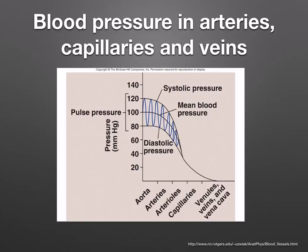Blood is pumped by the left ventricle into the aorta and this causes the aortic walls to stretch. The pressure falls in the arteries as a result of this extension. The elastic wall of the aorta then recoils, which increases the pressure again. This leads to regular fluctuations in the aorta and other arteries, which explains the zigzag nature of the curve at the beginning of this graph.